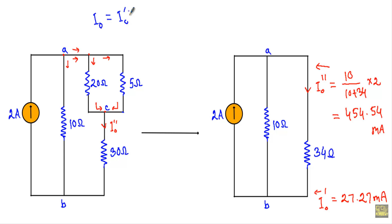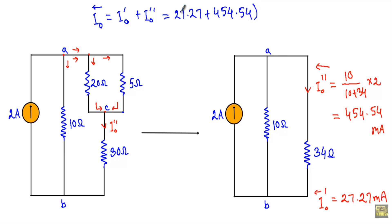Since both currents flow in the same direction, by the superposition principle the total current I_not = I_not_prime + I_not_double_prime = 27.27 + 454.54 = 481.81 milliampere, flowing from right to left. This is the current flowing through the 30 ohm resistor for the given circuit.